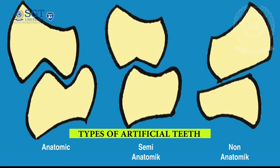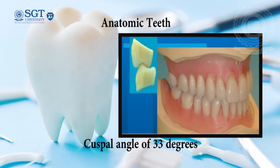Basically, there are three types of artificial posterior teeth: anatomic teeth, semi-anatomic teeth, and non-anatomic teeth. Anatomic teeth have a cuspal angle of 33 degrees, similar to that of natural teeth. They are used for patients with aesthetic concern, coordinated jaw movements, good ridges, and relatively young patients.